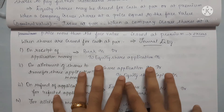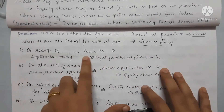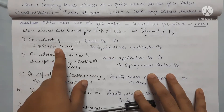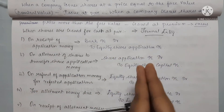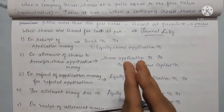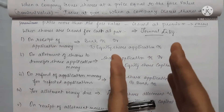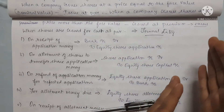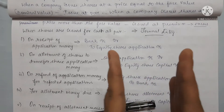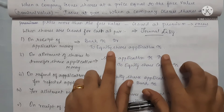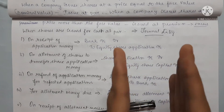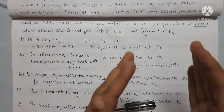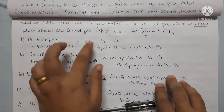We receive the bank account debit to equity share application amount. For example, if we receive 1,500 applications but our limit is 1,000 shares, we will receive the full application amount from all 1,500 applicants first, then proceed to allot only 1,000 shares.